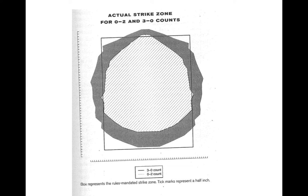Let's take a look at the strike zones for counts where the batter is down 0-2, or where the batter is up 3-0. Starting with the situation where the batter has two strikes and no balls: the inner strike zone, the cross-hatched area, is relatively small. It's almost like the umpire is trying to take the decision about the fate of that batter out of his own hands, forcing the pitcher to throw a pitch well over the plate so the batter has a reasonable chance of putting the ball in play. So the strike zone is much smaller when the count is 0-2.